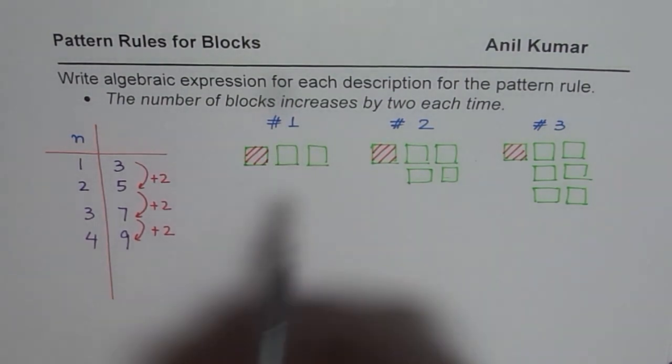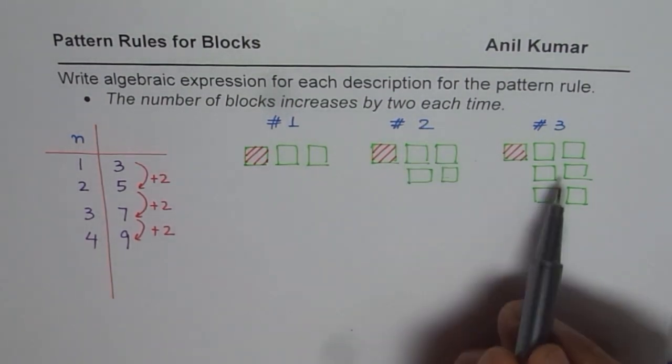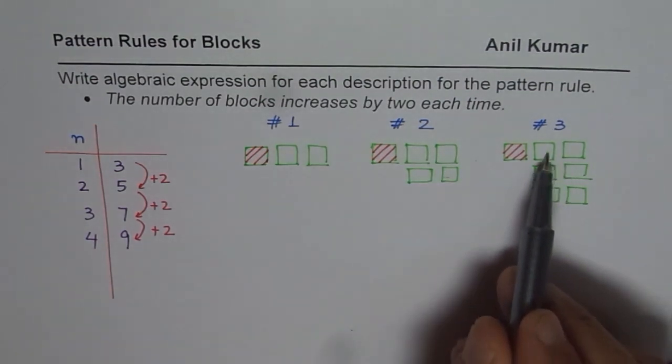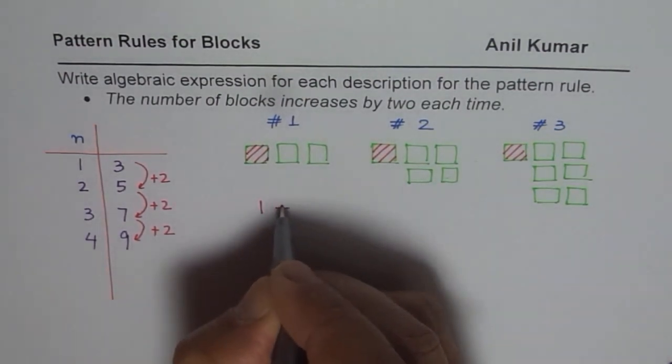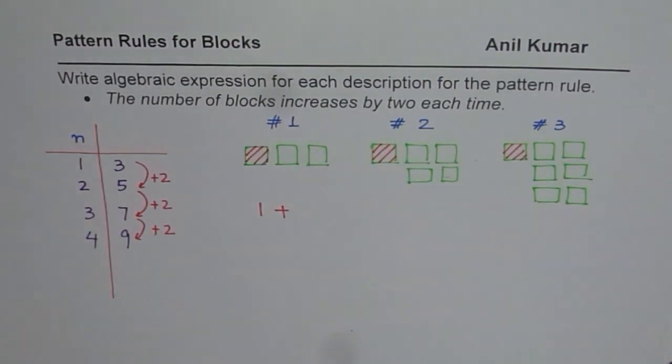How is two related with one? How is four related with two? And how is three related with these blocks which are six? That gives us one idea. That is one is fixed.